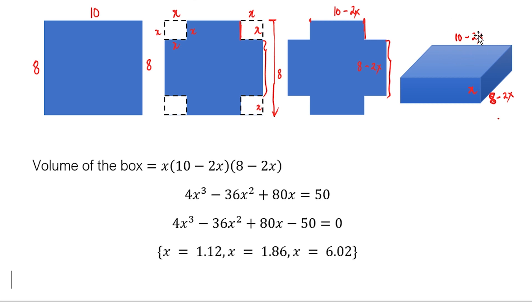So this value will become negative. The 10 minus 2x, as well as 8 minus 2x, will also become negative. A negative length. So that's not valid. So in this case, x equals 6.02 is not valid.